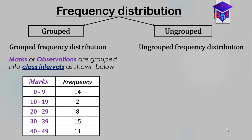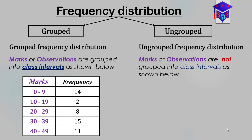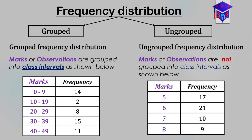In ungrouped frequency distribution, the marks or observations are not grouped into class intervals. They are distinct numbers. For example, the mark 5 has a frequency of 17, meaning 17 students scored 5. The mark 6 has a frequency of 21, meaning 21 students scored 6.